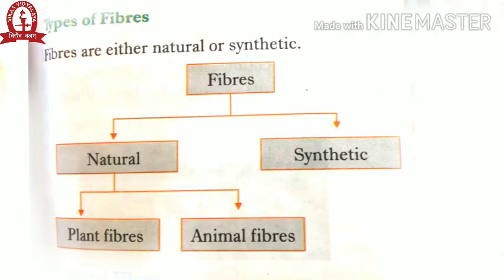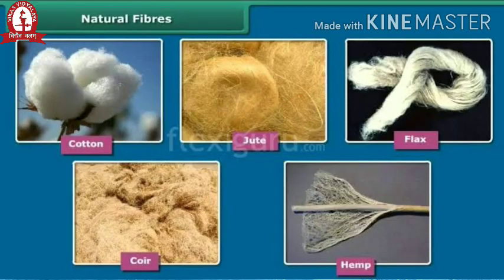Good morning. Today we will start the topic: types of fibers. Fibers are either natural or synthetic. Natural fibers are fibers that are obtained from plants or animals, for example jute, wool, silk, and cotton.